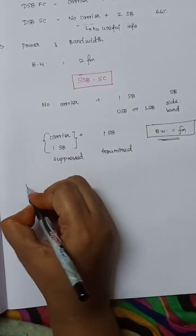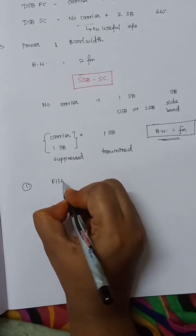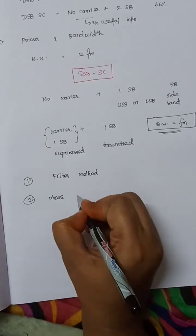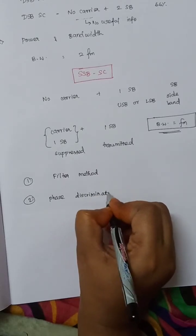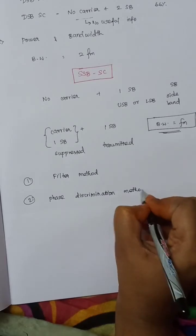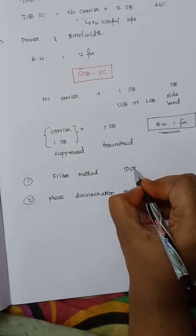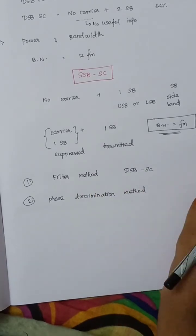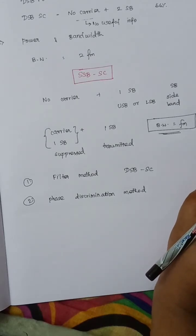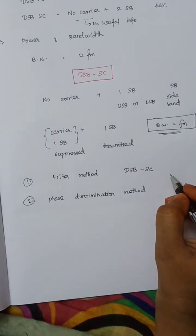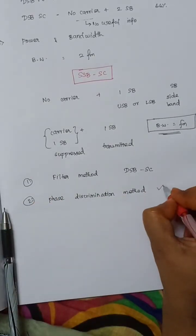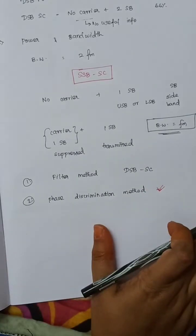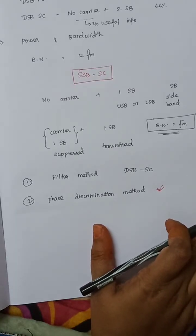There are methods to generate SSB. The first method is the Filter Method, also called the Frequency Discrimination Method. In this method, a DSB-SC signal is first generated using a product modulator, and then a perfect bandpass sideband filter is used to select one sideband with better rejection.